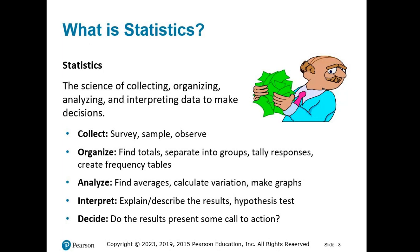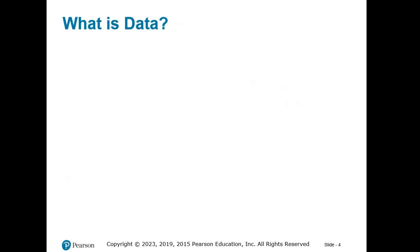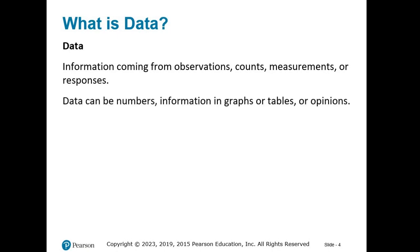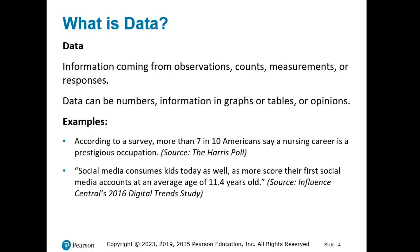So we've talked about the process, but we haven't defined a word that is critical in the field of statistics, and that is data. What is data? Data is information coming from observations, counts, measurements, or responses. It can be numbers, information in graphs or tables, or opinions. For example, more than 7 in 10 Americans say a nursing career is a prestigious occupation, and kids get their first social media accounts at an average age of 11.4 years old. Both of these represent data — don't think that data only means numbers. People's opinions can be data too.